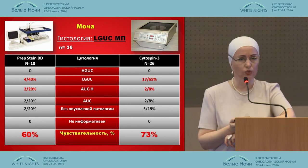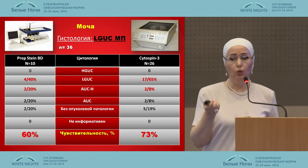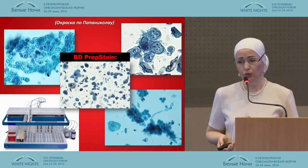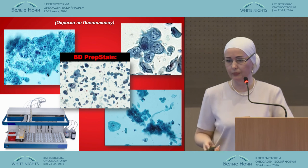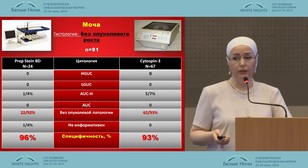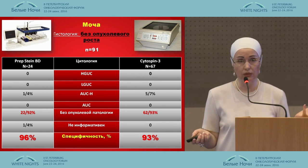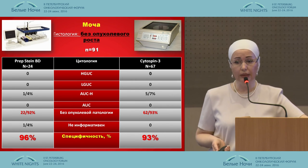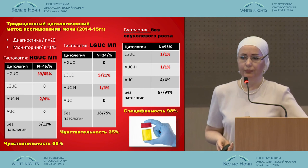Low-grade carcinoma remains problematic. If we do not know whether there was treatment, polyomavirus, or something else, we make an error. The sensitivity at Prepstain is 60%. This coloration shows urothelium without changes, here is high-grade carcinoma, and this is unchanged epithelium. This is from Cytospin as well.